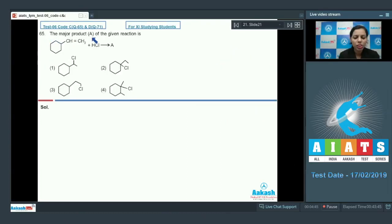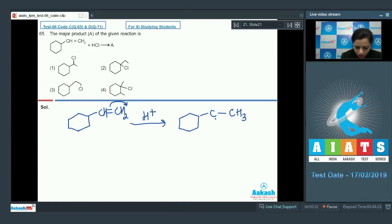Question number 65: The major product A of the given reaction. We have this reaction in which HCl is attacking on this alkene to give you the product A. We need to just find out the major product A. First, just going to draw here the structure of this alkene that's given in the question. In the presence of H+ ion, there would be shifting of the electrons, and here is the formation of CH3, and at this carbon there would be the positive charge because the carbocation is formed here.